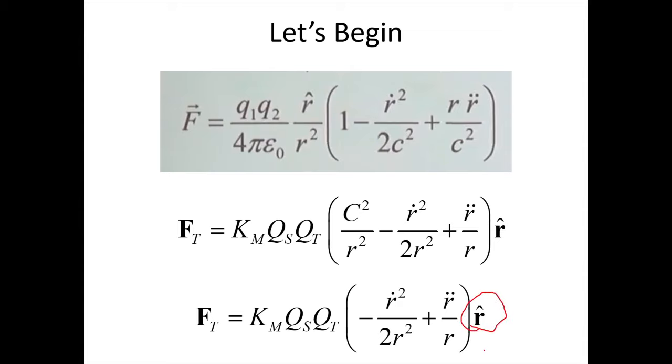That's the kill, because this is a radial-only force model. It only produces forces along the radius between two charges. Already right there, you're eliminating half the effects we need in order to explain electrodynamics. That right there is the kill.